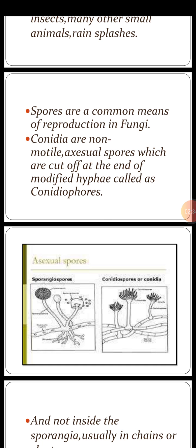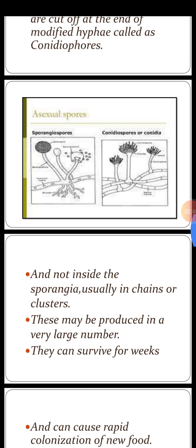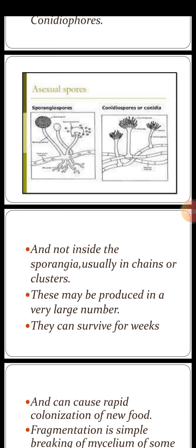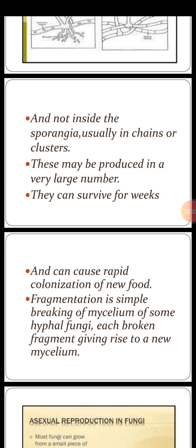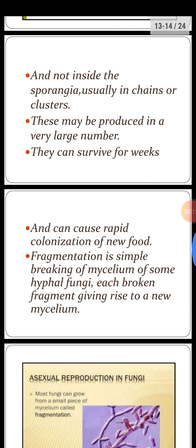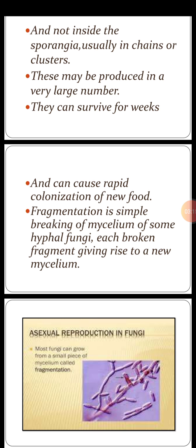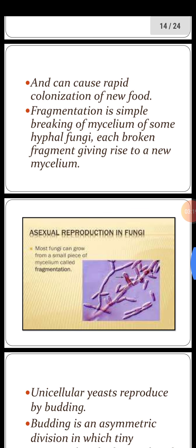Conidia are non-motile asexual spores which are cut off at the end of modified hyphae called conidiophores. As shown in the picture, there are sporangiophores containing sporangia in which spores are produced, and conidiophores in which conidia are present — not inside sporangia — usually in chains or clusters. They may be produced in very large numbers and can survive for weeks, causing rapid colonization of new food.